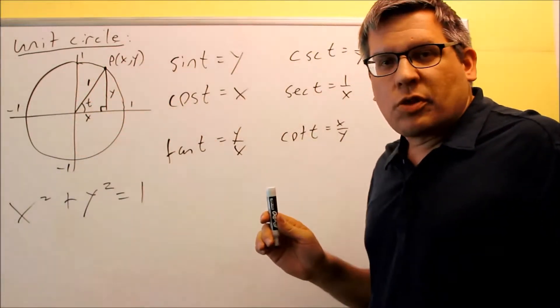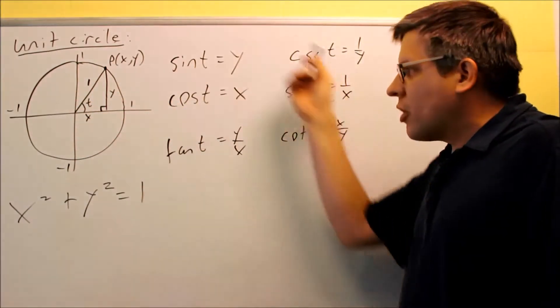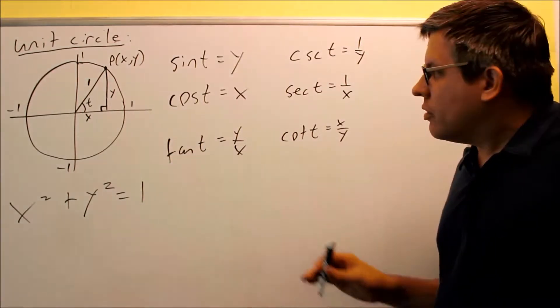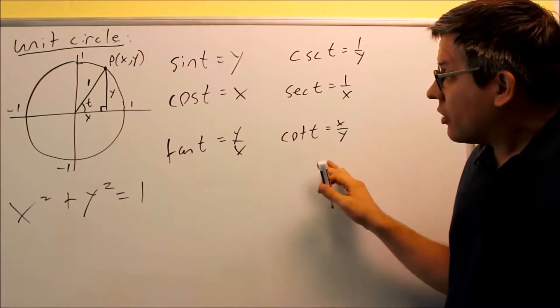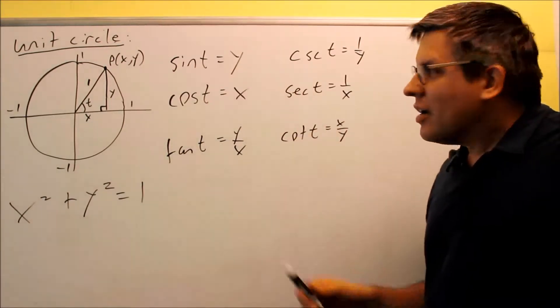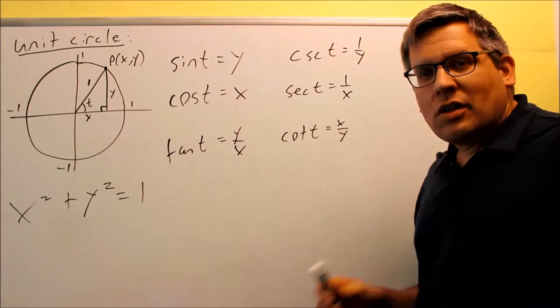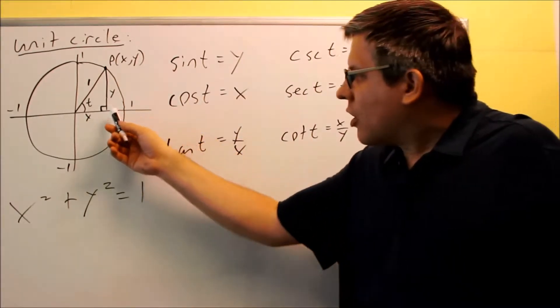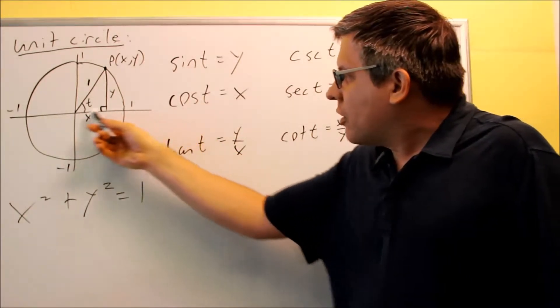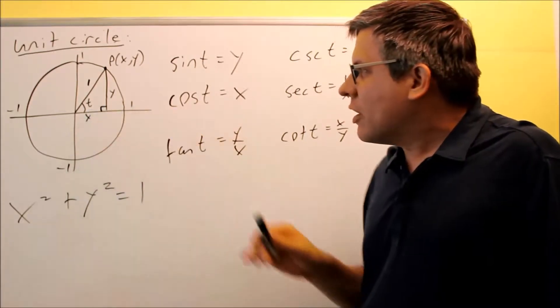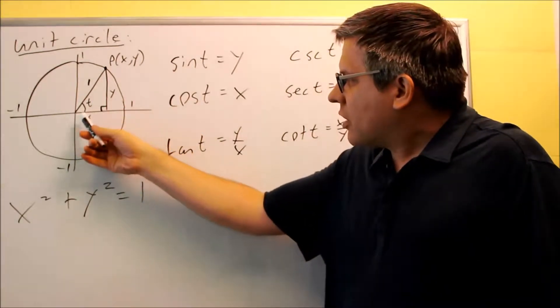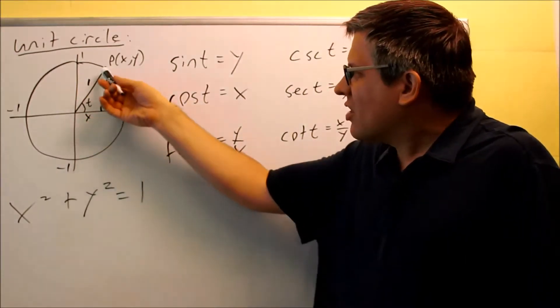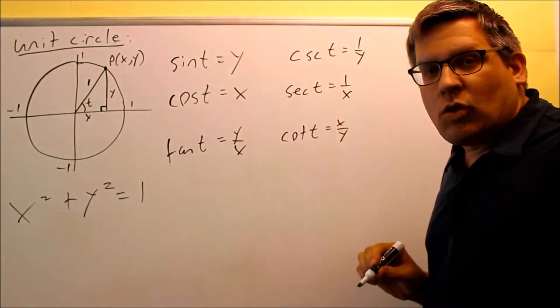The reason why we're talking about a unit circle is because our six trig functions all come off of the unit circle, and you can look at the special relationship. A trig function is a function that relates the angle that you have to a side of a triangle. I have drawn an angle that's measured from the positive x-axis. That's my angle t right there. It goes to a certain spot on the unit circle, and it's going to hit the circle at this point right here in x, y.